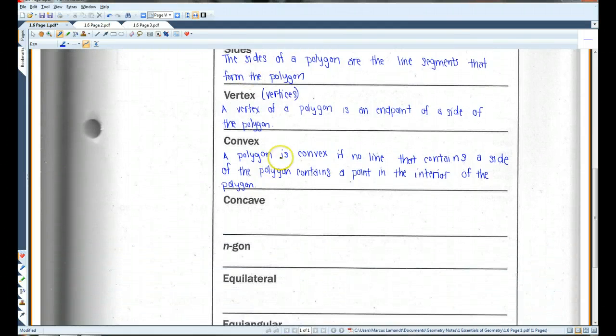On the contrary, a concave polygon looks something like this. You see how one of the vertices is cutting into the polygon? That makes it concave.